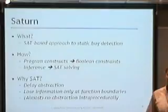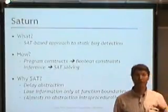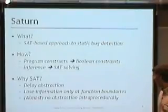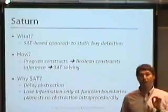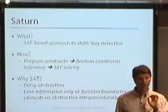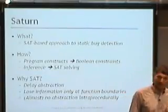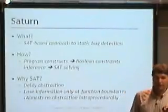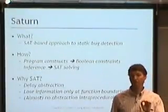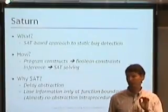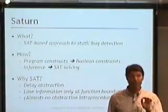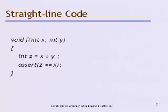Intra-procedurally, we're going to have almost no abstraction — representing the computation almost completely faithfully. We only lose information at function boundaries, where we very consciously perform abstraction. The intuition for why that's okay is that function boundaries are the natural abstraction boundary the programmer put into the program. The interface for a function is already simpler than the behavior inside it. From our experience, function boundaries are good places to abstract, and inside the function, keeping much more information around lets us do a lot better.